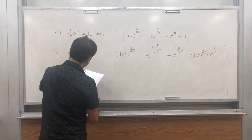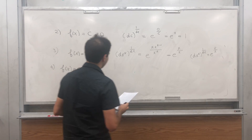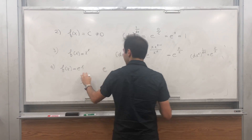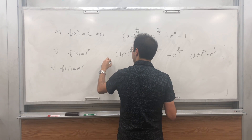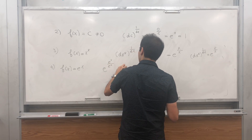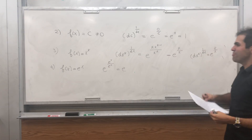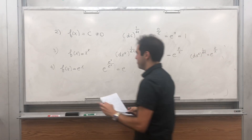f(x) equals e to the x. Then we get e of the derivative of e^x over e^x, and we get e. Surprisingly, it gives you another constant — who would have thought?